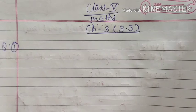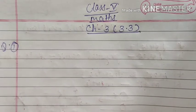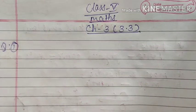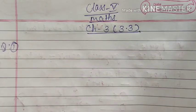In question number 1, division with 10, 100, 1000, and 10,000 are given. So here we will know the actual division process.